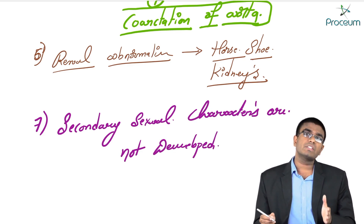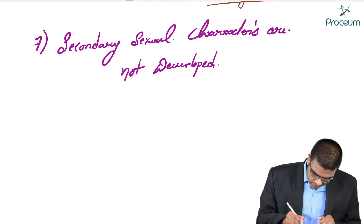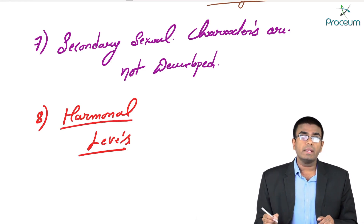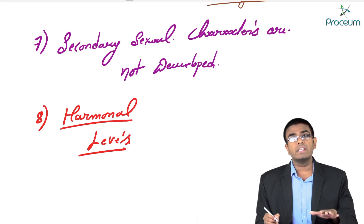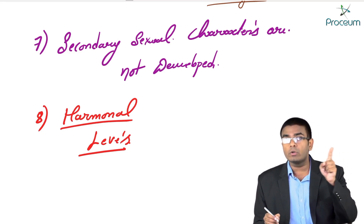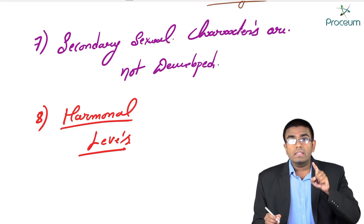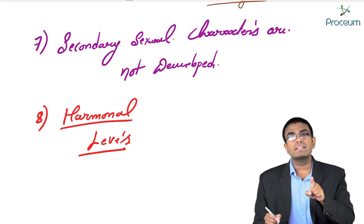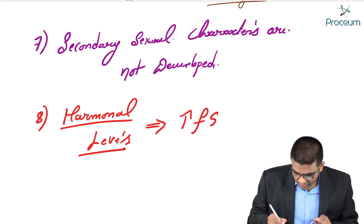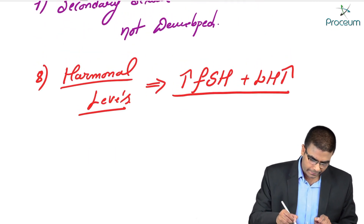We already know breast development is not proper — shield-like chest with widely spaced nipples. Regarding hormonal levels: in Turner females, the ovaries are not properly developed, so there is no estrogen and no androgens. Estrogen normally gives negative feedback to FSH. Without estrogen and androgens, there is excessive production of FSH and LH. So FSH and LH levels are very high in these females.